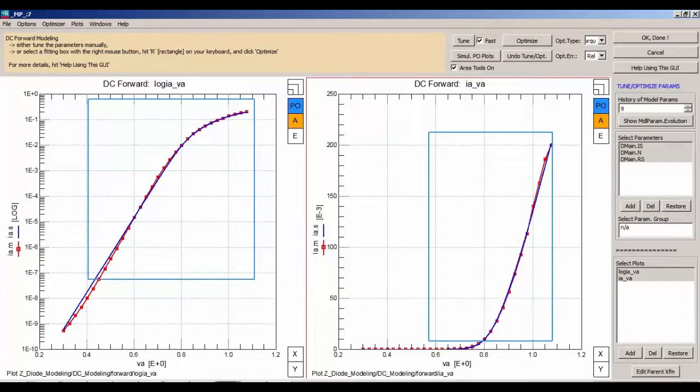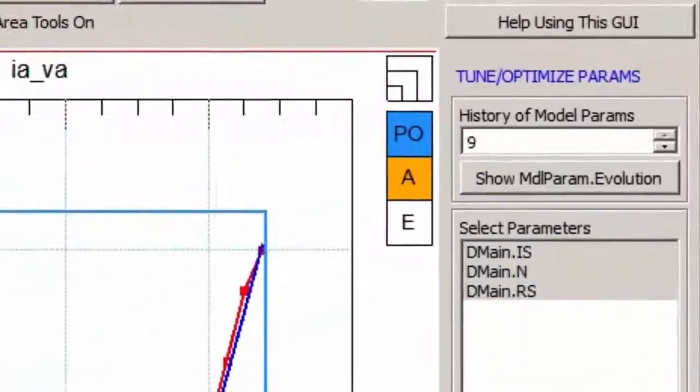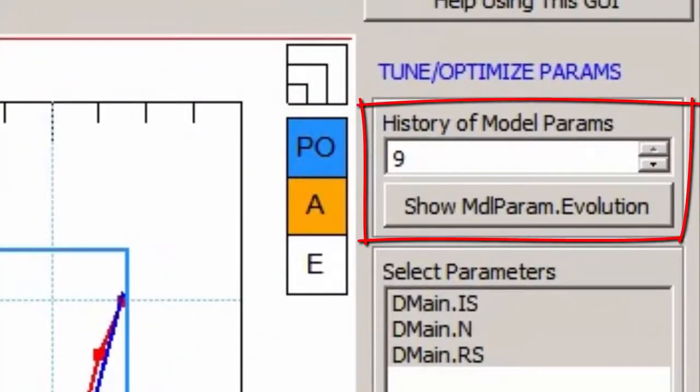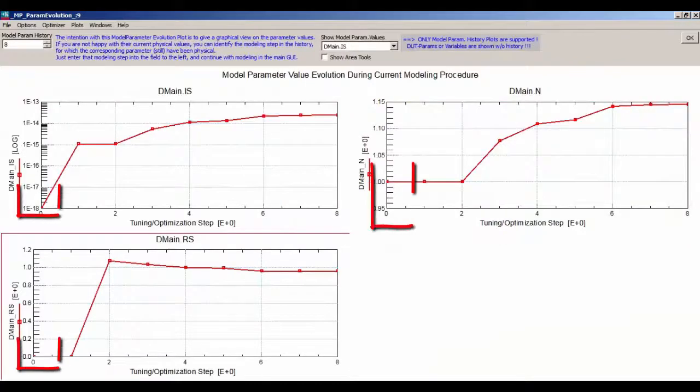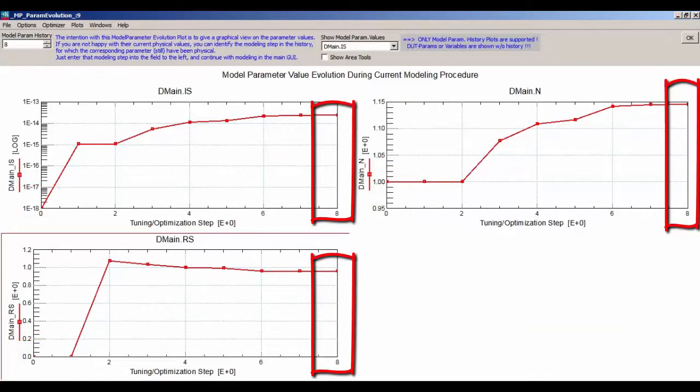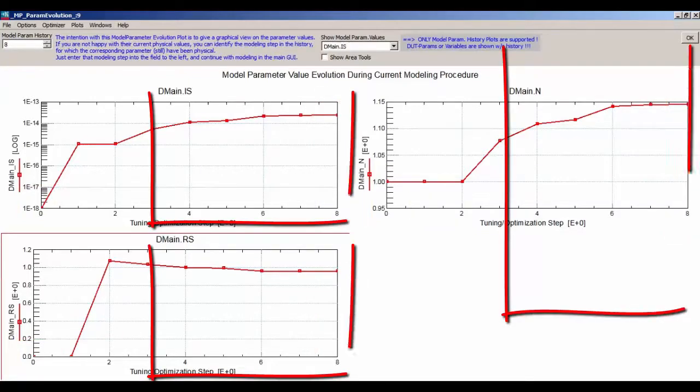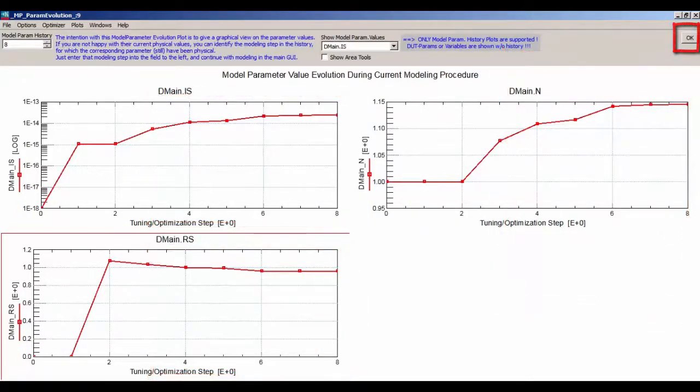We could now inspect the evolution of the parameter values during the current modeling step by selecting the button Show model parameter evolution. On the left are our starting parameter values and to the right the final ones. The values seem to have converged and so I hit OK to return to the main GUI.